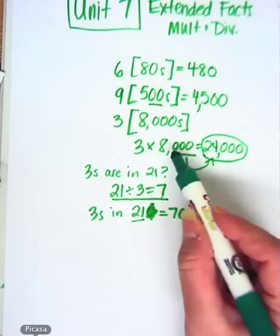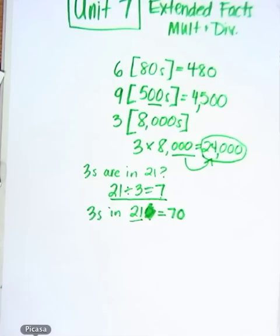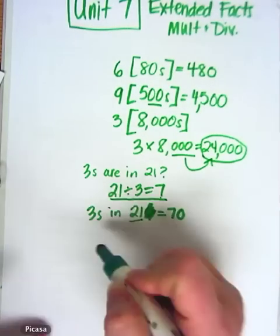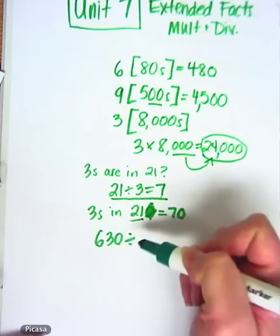Now, I'm going to tag that zero back onto my answer. Because just like in multiplication up here, if you cover a zero, you always have to put the zero back on the answer.